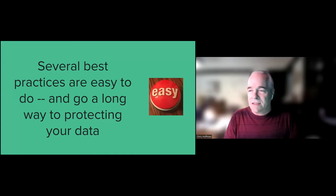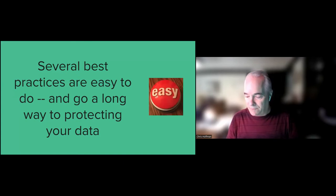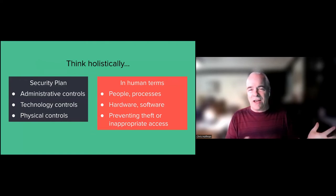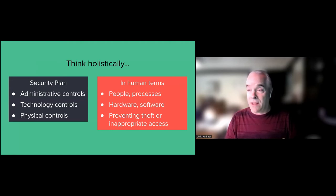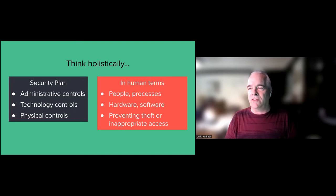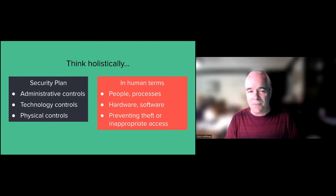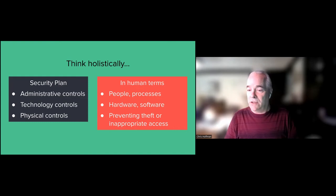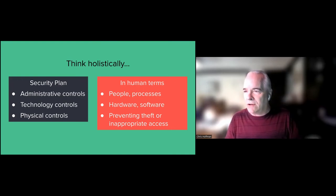There are a number of best practices that really are quite easy to do, and they go a long way to protecting your data. When we develop a security plan for a campus or group, it's divided into administrative controls, technology controls, and physical controls. Even on the individual scale of you and your research, those correspond to thinking holistically about threats and ways to protect your information. Administrative controls are basically around people and processes; technology controls are around hardware and software; and physical controls are about making sure your laptop isn't stolen and preventing inappropriate access — like someone looking over your shoulder at your data in a café.